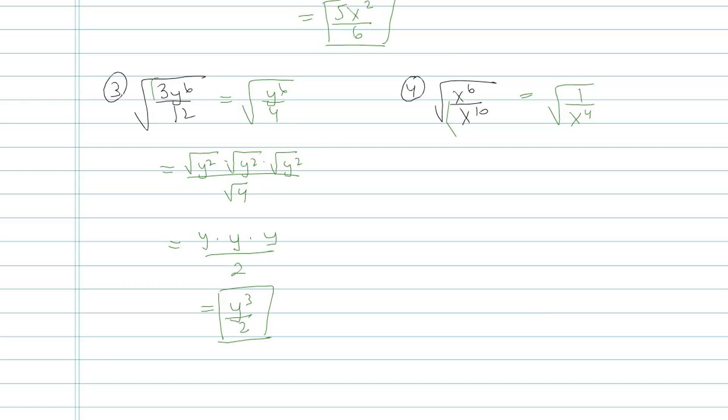x to the negative fourth power, and then the negative 4 tells me to put x to the fourth in the bottom of a fraction. Okay, so let's split that up into square root of 1 over square root of x to the fourth. Square root of 1 is just 1. Square root of x to the fourth is x squared. So these problems were when I worked with fractions that have variables under square roots. All of these numbers were perfect square numbers, and you'll see some where they're not perfect squares, where you're going to have to rationalize the denominator.